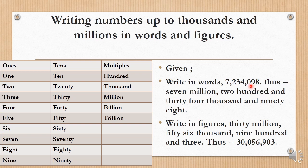Now we're reading: seven, there are two commas meaning two periods. Seven million, two hundred and thirty four thousand, and ninety eight.